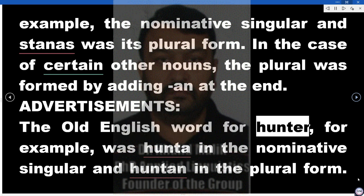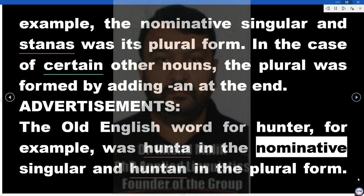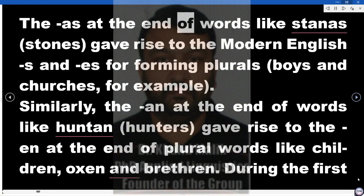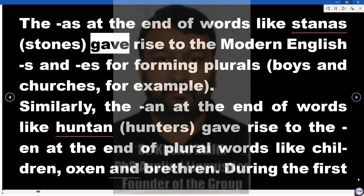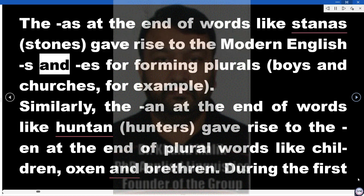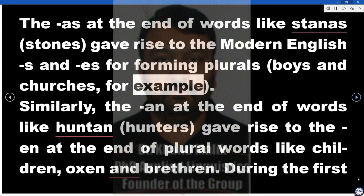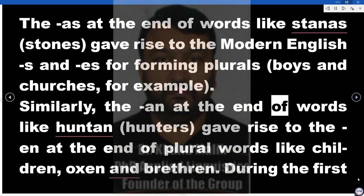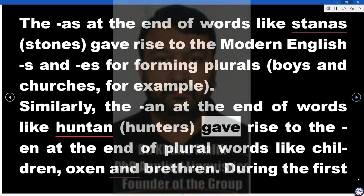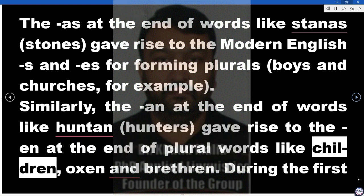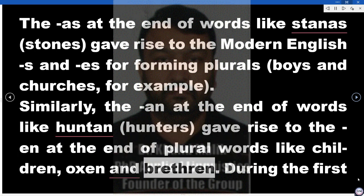The Old English word for hunter, for example, was 'hunta' in the nominative singular and 'huntan' in the plural form. The -as at the end of words like 'stanas' (stones) gave rise to the Modern English -s and -es for forming plurals (boys and churches, for example). Similarly, the -an at the end of words like 'huntan' (hunters) gave rise to the -en at the end of plural words like children, oxen, and brethren.